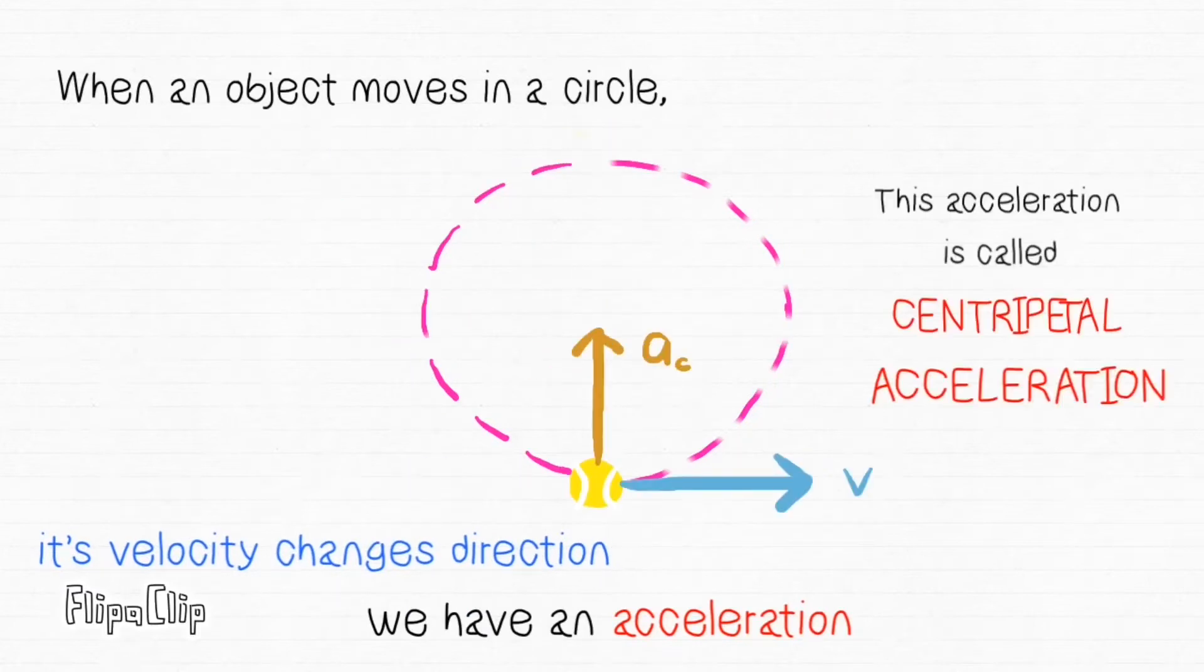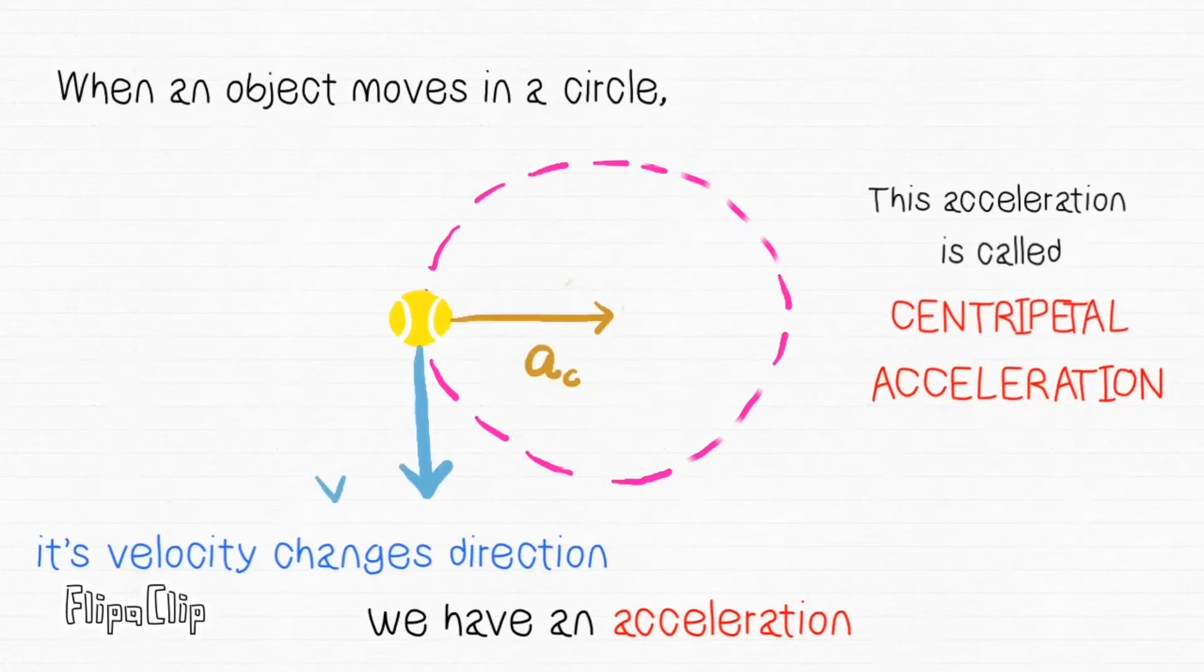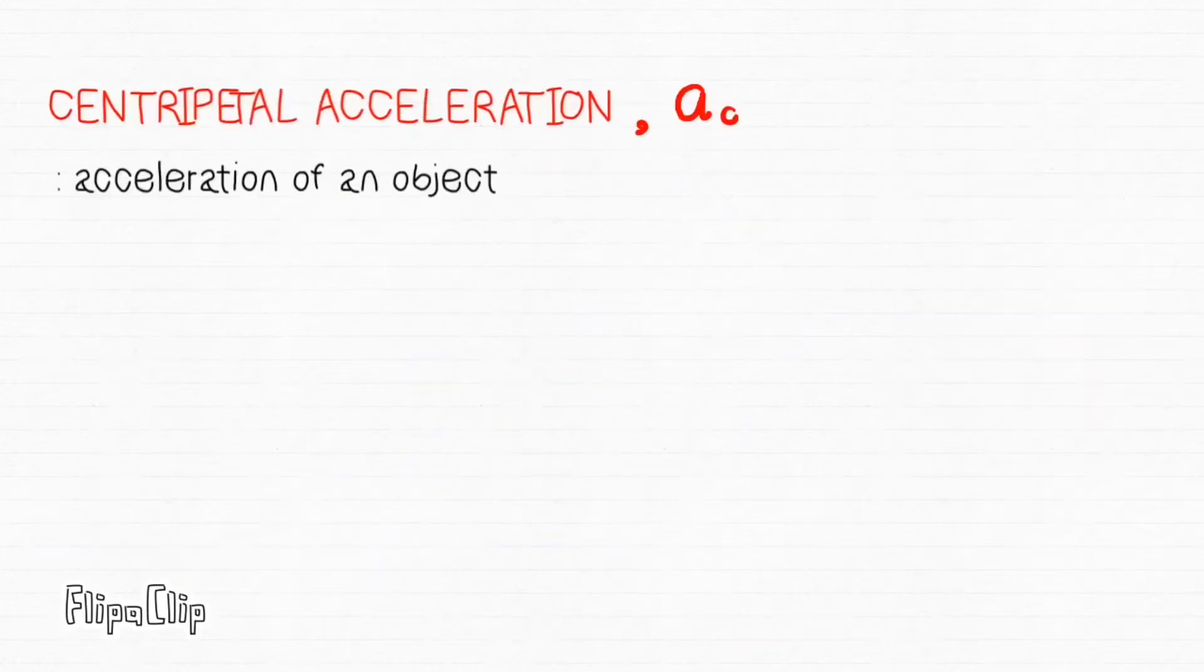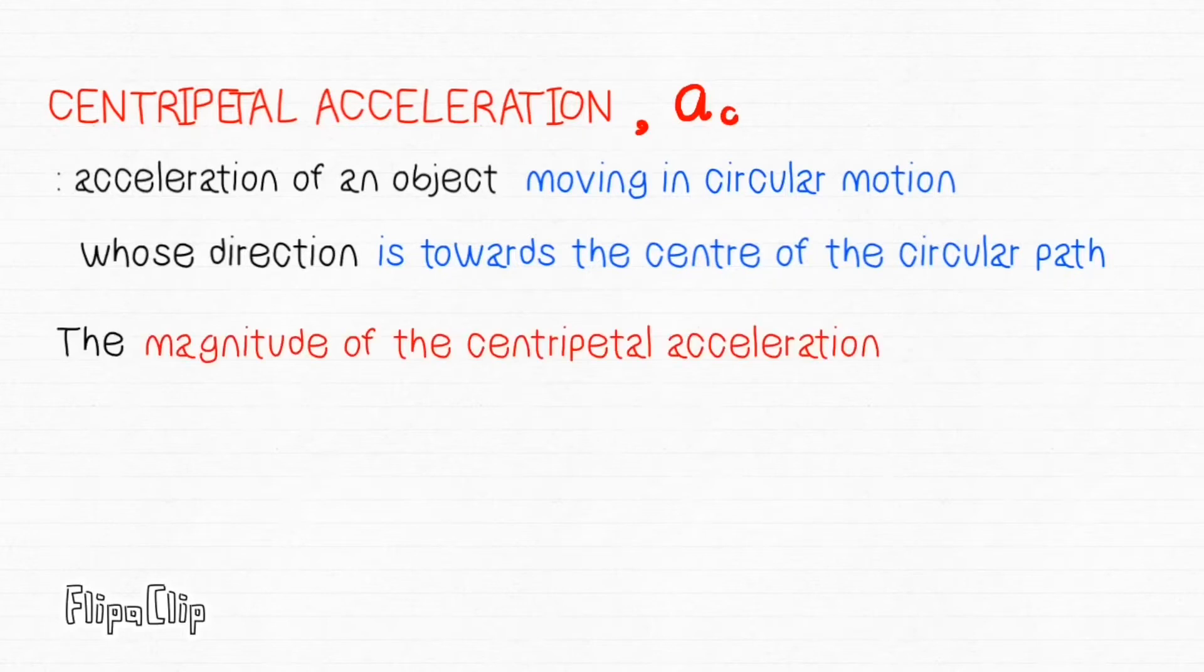This acceleration is called centripetal acceleration. Centripetal acceleration is acceleration of an object moving in circular motion whose direction is towards the centre of the circular path. The magnitude of the centripetal acceleration is given by V square over R.